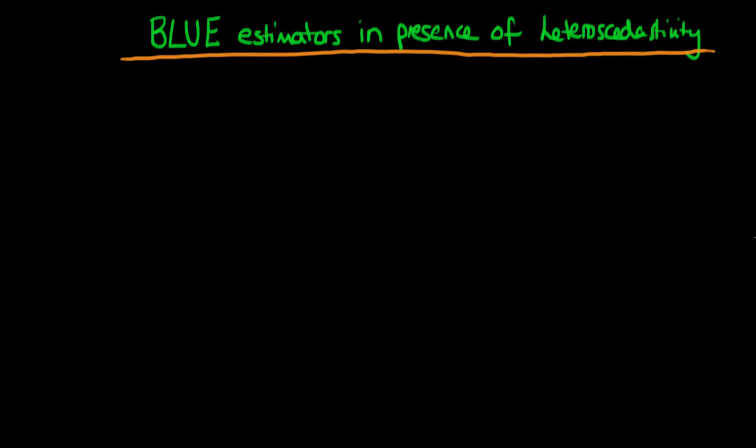In this video I want to start to talk about how we can actually derive BLUE estimators in the presence of heteroskedasticity, and those BLUE estimators actually happen to be GLS.